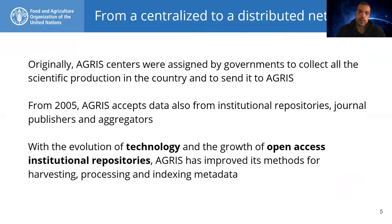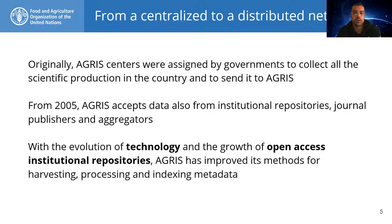Agris is a database of almost 12 million multilingual bibliographic metadata records on agricultural research. It is also a big network of 434 data providers from 150 countries. According to Google Analytics, Agris receives around 8 million visits per month and is accessed from all over the world — 200 countries and territories. At the beginning in 1974, governments designated official Agris centers whose role was to collect all scientific production in their country. From 2005, Agris started to accept data from institutional repositories, publishers, and aggregators. With the evolution of technology and open access, Agris also has to cope with problems related to automatic discovery, harvesting, and processing of data and metadata available on the web.